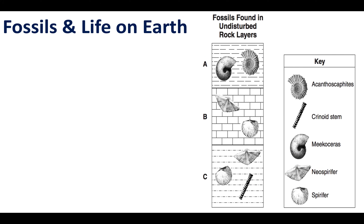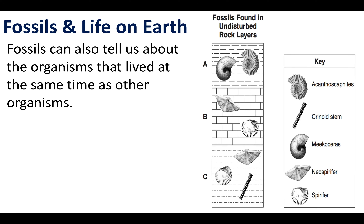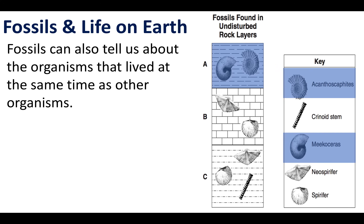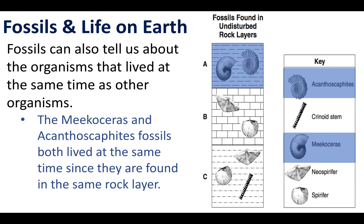Fossils can also tell us interesting things about organisms that lived at the same time in earth history. Looking at rock layer A, there are two specific fossils within that layer. Since they're in the same layer, those two organisms existed on earth at the same time. For example, the Mycoceras fossil and the Acanthoscephites fossil both lived at the same time, and we can prove this because they're found in the same rock layer.